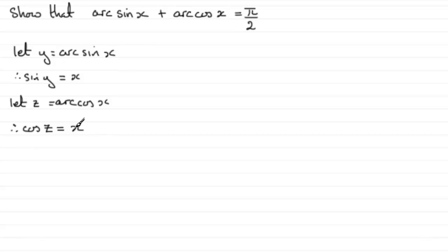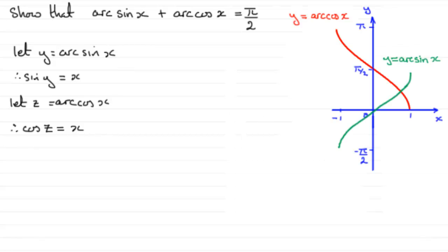Now, I would want to draw up the graphs — sketch the graphs of y equals arc sine x and y equals arc cos x. And if I did that, we'd have the graphs looking like this. We should be familiar with these graphs by now. So, what we're looking for is a value of x, which can be positive between 0 and 1, or negative between 0 and minus 1. Let's start when x is a positive value.